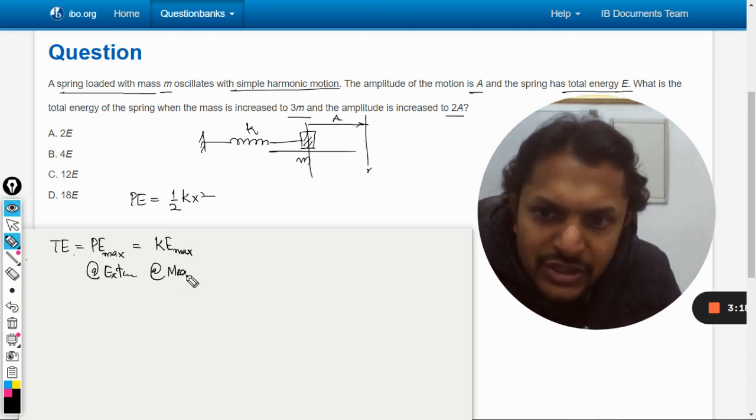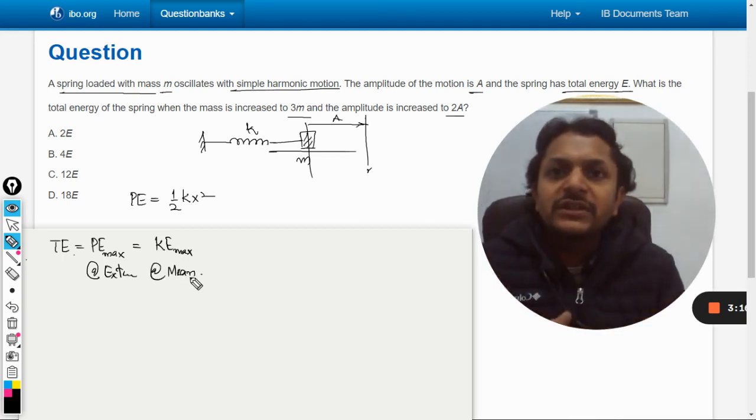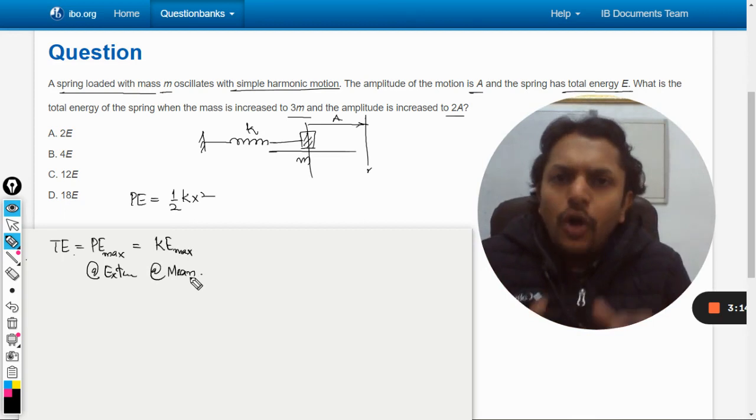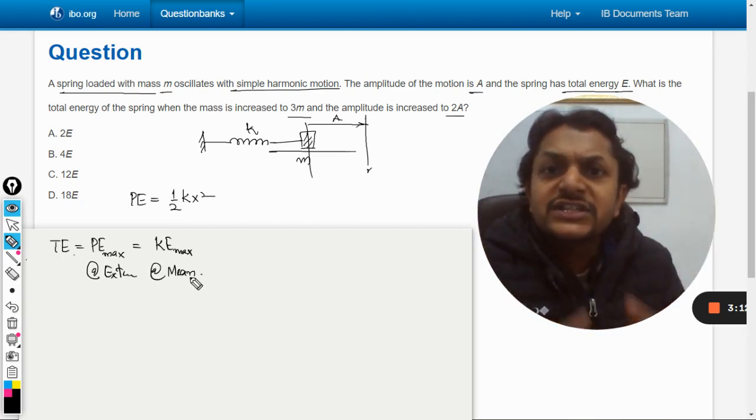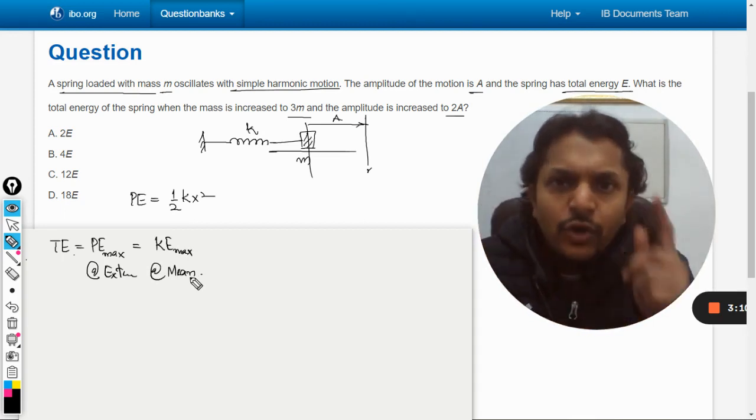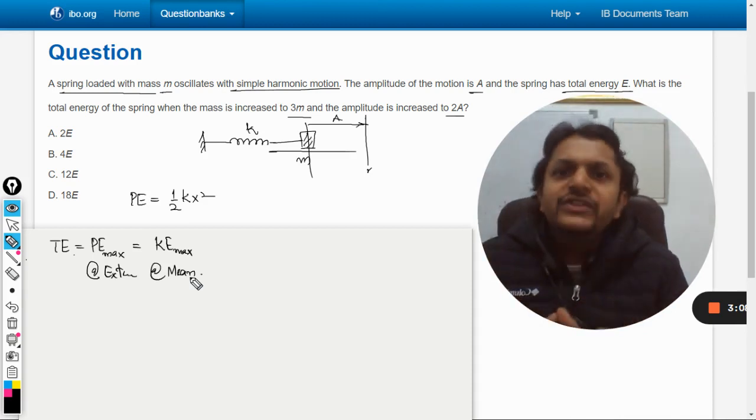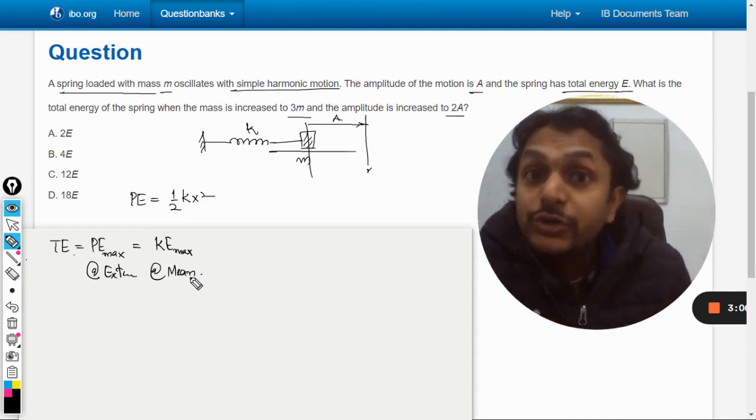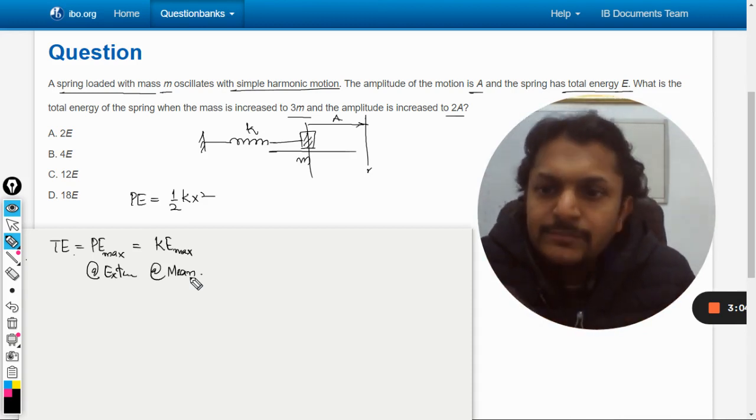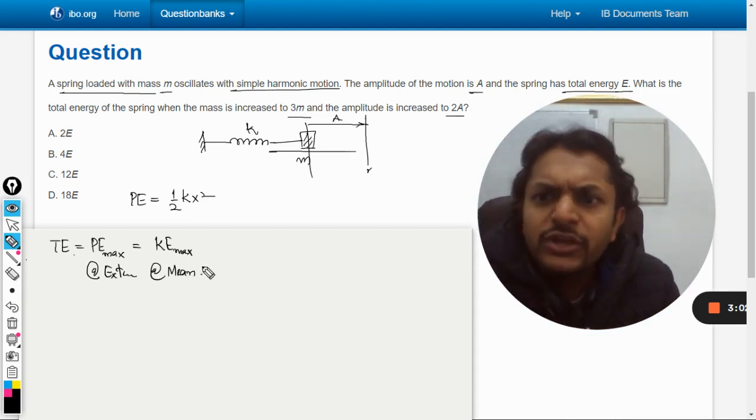So if you are considering only mean position, there is no potential energy, so all of the total energy is converted into kinetic. And when we talk about extreme positions, all of the total energy is converted into potential because the kinetic is zero. So we can use either formulation.